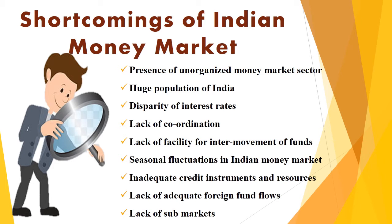The next shortcoming is disparity of interest rates, which is also a very important factor for the slow growth of the money market in India. For example, Bombay will have a higher interest rate for short-term funds while Punjab will have a lesser rate. This reveals more money activity in Bombay and less in Punjab. Such disparity of interest rates has always been a major problem for the development of the Indian money market.